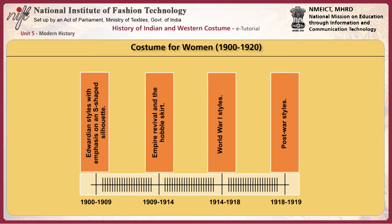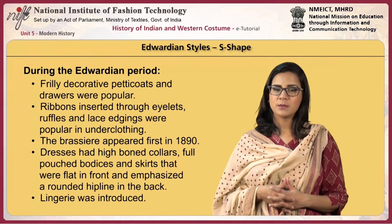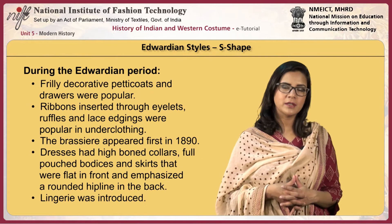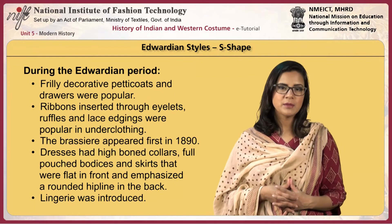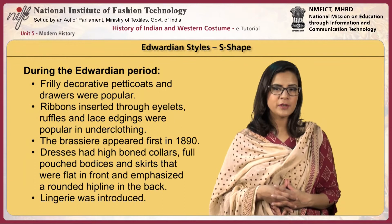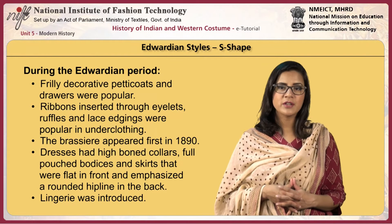The costumes for women varied according to the periods as shown in a timeline. During the Edwardian period, the emphasis was on the S-shaped silhouette. Frilly decorative petticoats and drawers continued to be popular. Ribbons inserted through eyelets, ruffles, and lace edgings were popular in underclothing. The brassiere appeared first in 1890 and gradually became a basic item of underwear for adult women. Typical dresses had high boned collars, full pouched bodices, and skirts flat in front that emphasized a rounded hip line in the back. Bishop sleeves and its variations were predominant; frilly ruffles and jabots were often placed at the front of the neck for fullness.